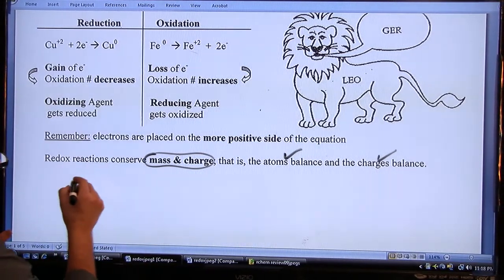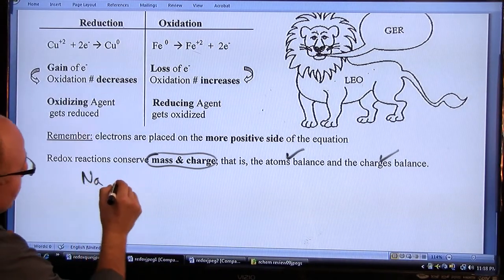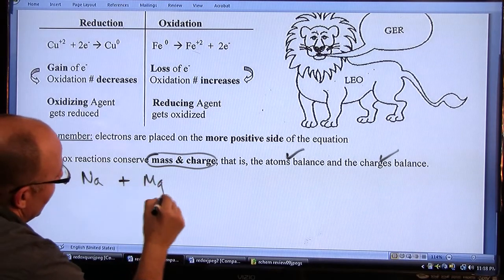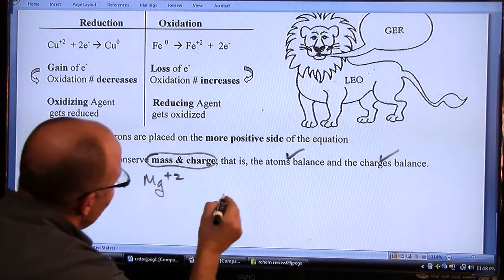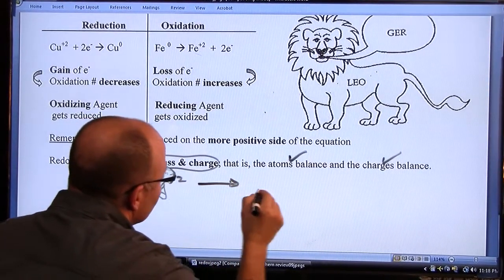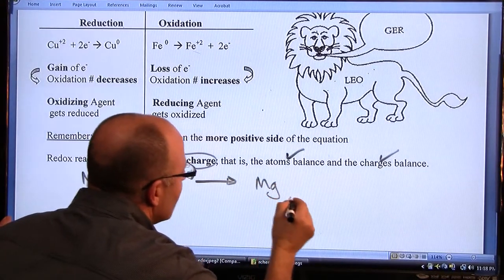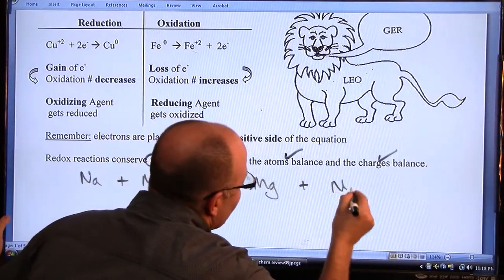Now suppose we did this: Na plus Mg plus 2 yields Mg plus Na plus 2.